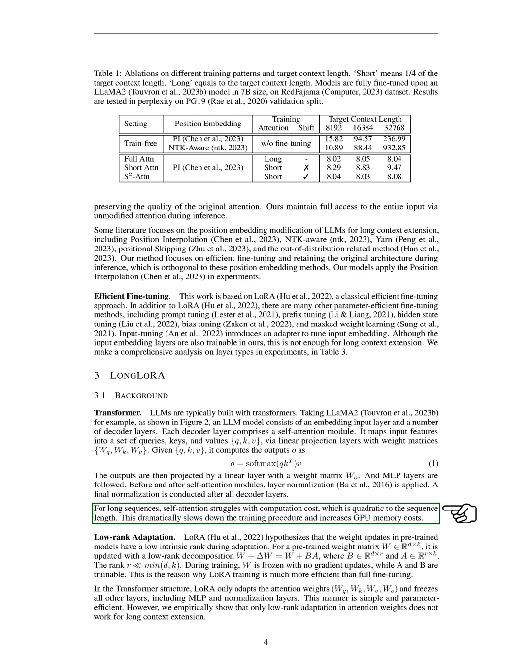This significantly slows down the training procedure and increases GPU memory costs. LoRA hypothesizes that the weight updates in pre-trained models have a low intrinsic rank during adaptation. For a pre-trained weight matrix, it is updated with a low-rank decomposition. During training, the original weight matrix is frozen with no gradient updates, while the low-rank decomposition is trainable. This is why LoRA training is much more efficient than full fine-tuning. However, we found that only low-rank adaptation in weights does not work for long context extension.